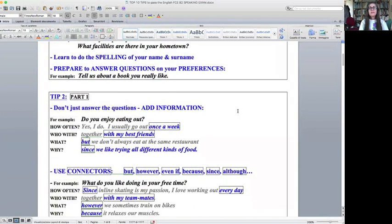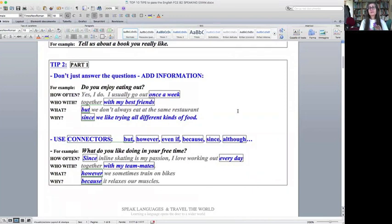Then tip two: don't just answer the questions, but add information. Let me give you an example. Do you enjoy eating out? Answer with how often: Yes, I do. I usually go out once a week. Maybe say who with: I usually go out once a week together with my best friends. And explain what you do, but we don't always eat at the same restaurant. And why is that? Since we like trying all different kinds of food.